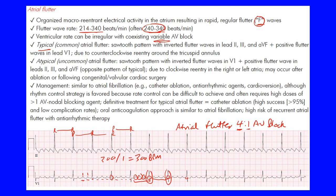There are two forms of atrial flutter. The typical or common form shows a sawtooth pattern with inverted flutter waves in the inferior leads II, III, and aVF, and a positive flutter wave in lead V1. You see these positive flutter waves in V1 and the inverted waves in the inferior leads. This is the typical common atrial flutter with a counterclockwise re-entry circuit around the tricuspid annulus.